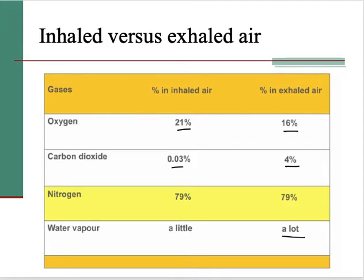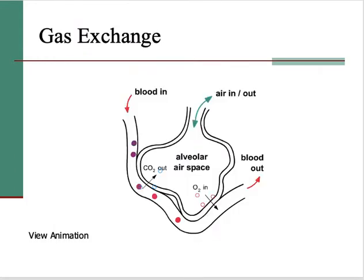Let's look at the actual mechanism of gaseous exchange — what's happening at the alveoli. Here we have a picture of an alveolus. Air comes in through the bronchiole and goes down into the alveoli. The alveolus is the site of exchange of gases with the blood. Oxygen here goes into the bloodstream via the capillary running alongside the alveolus. Oxygen diffuses from the alveoli into the bloodstream, and carbon dioxide diffuses from the bloodstream out to the alveolus, and then up and out of the bronchiole and out of the lungs.